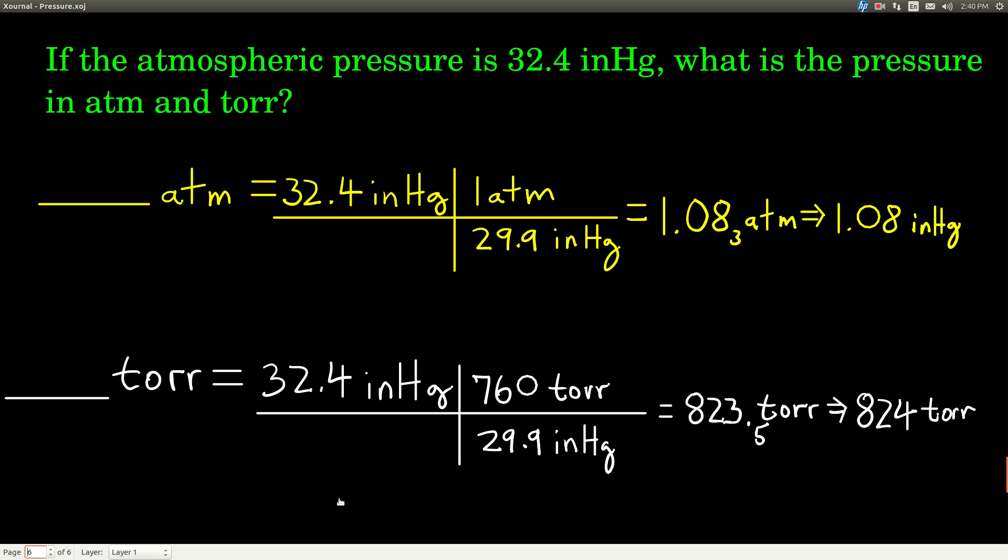So an example. Suppose the atmospheric pressure is 32.4 inches of mercury. What's the atmospheric pressure in atmospheres and in torr? It's dimensional analysis. For atmospheres, the units of our answer will be in atmospheres. Our starting point is 32.4 inches of mercury. The conversion factor from that table: one atmosphere equals 29.9 inches of mercury. We put 29.9 in the denominator. Inches of mercury cancel, we're left in atmospheres. We get 1.08 atmospheres.